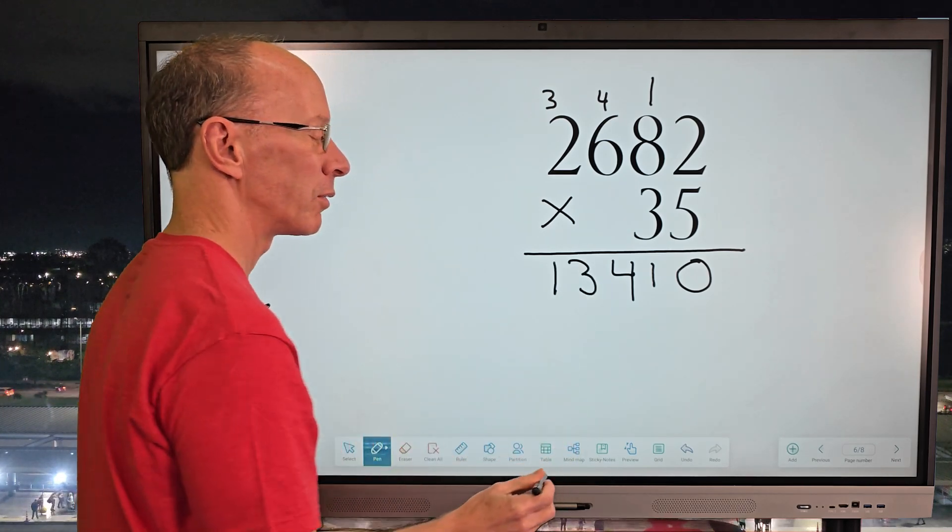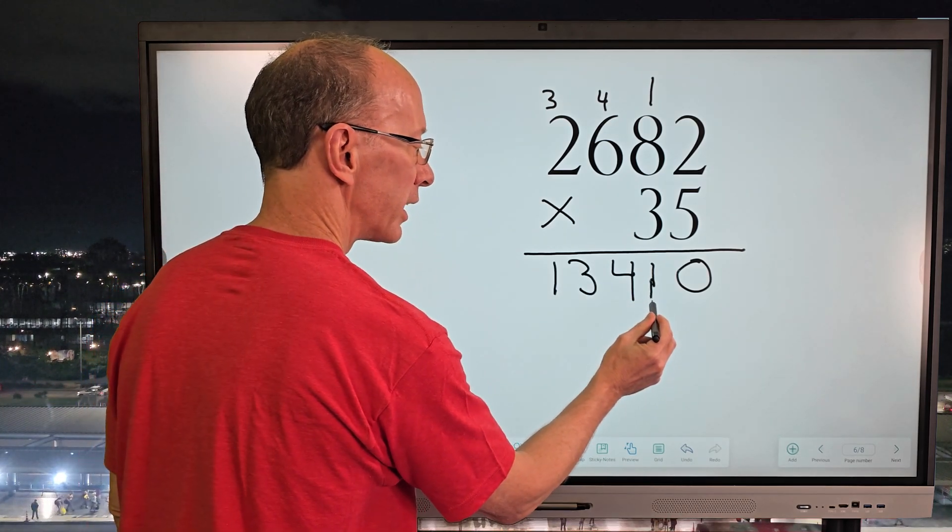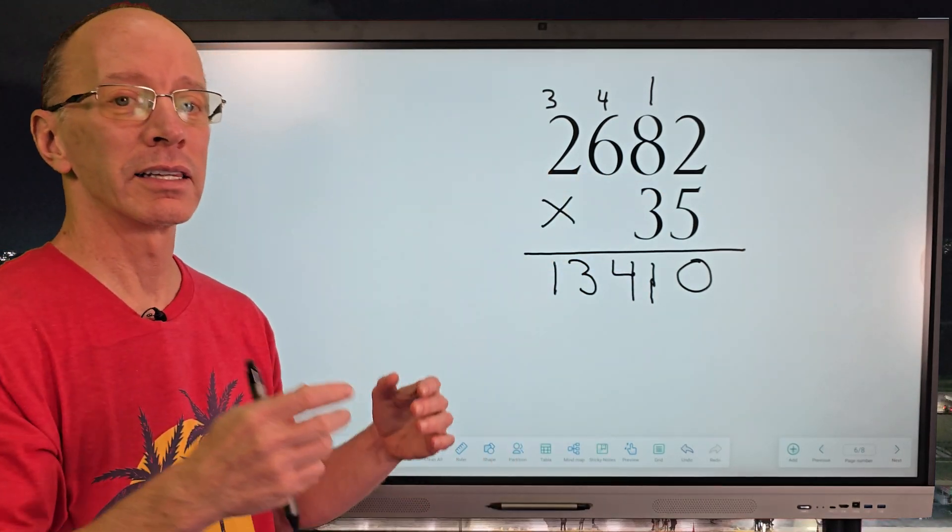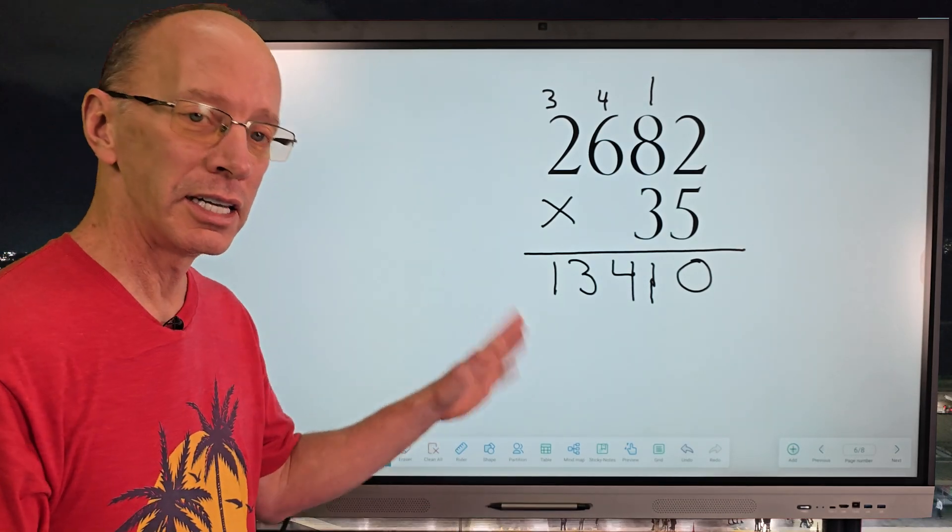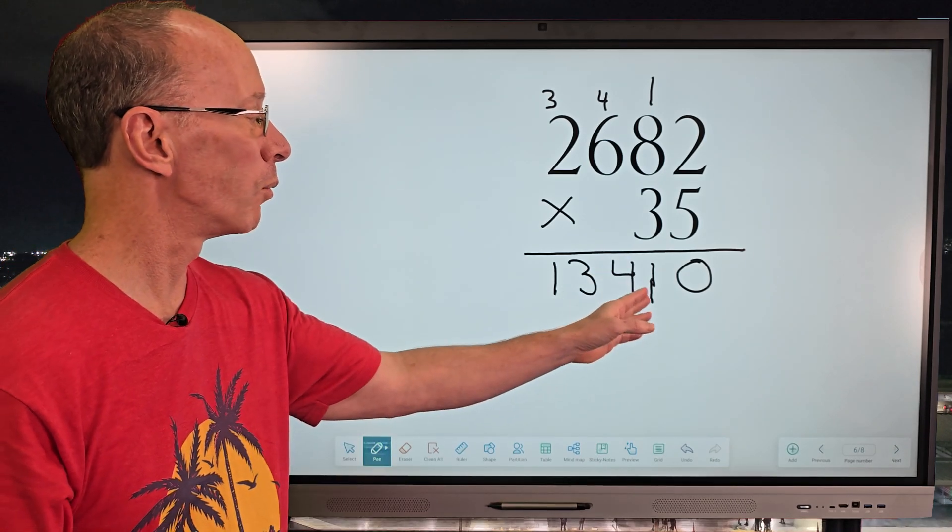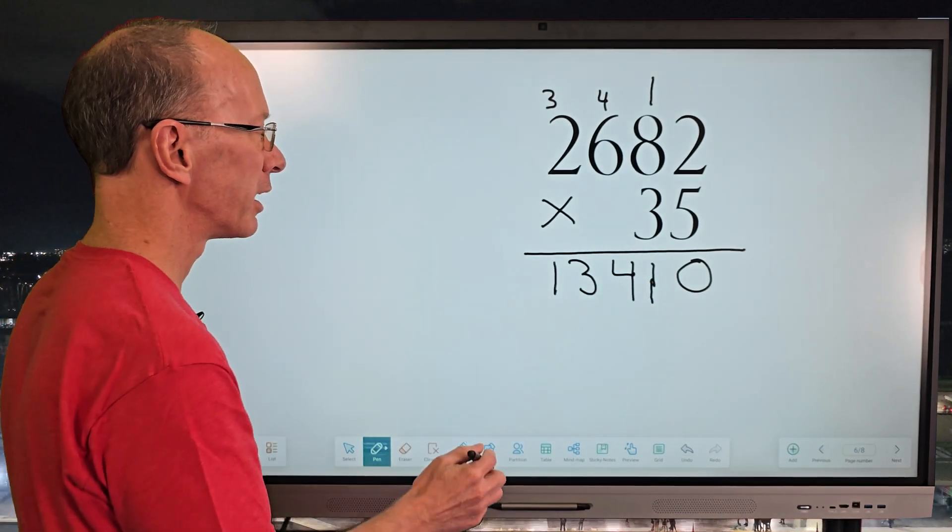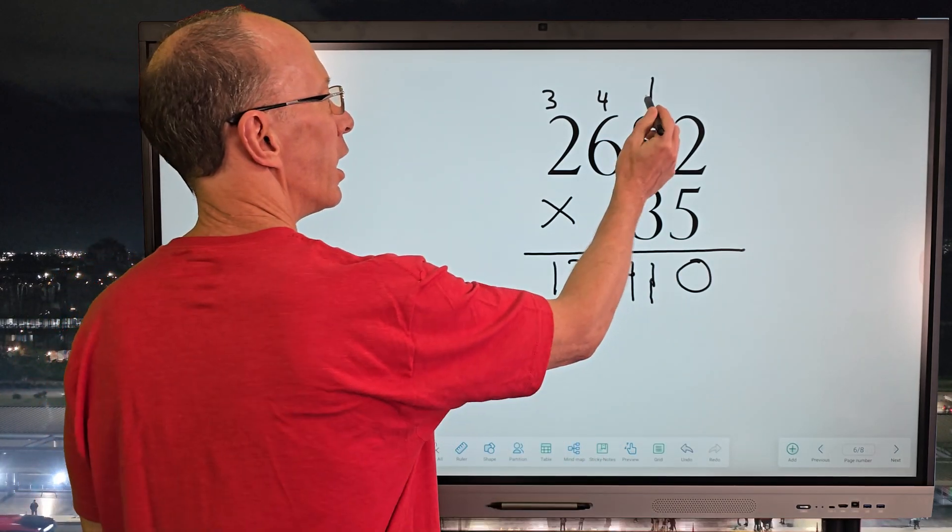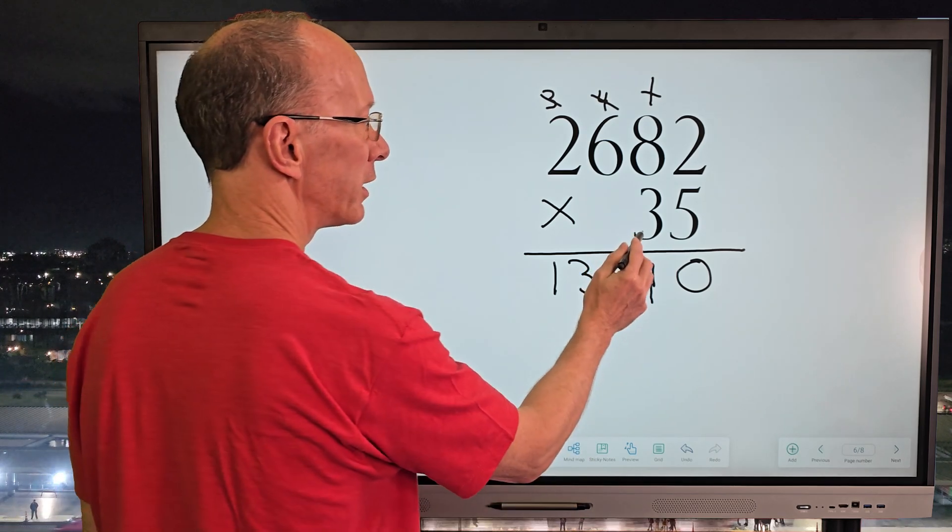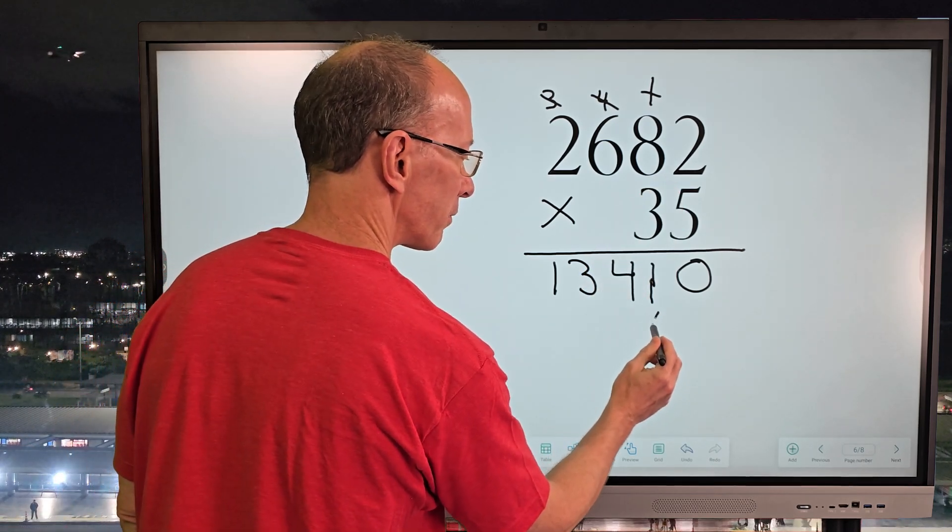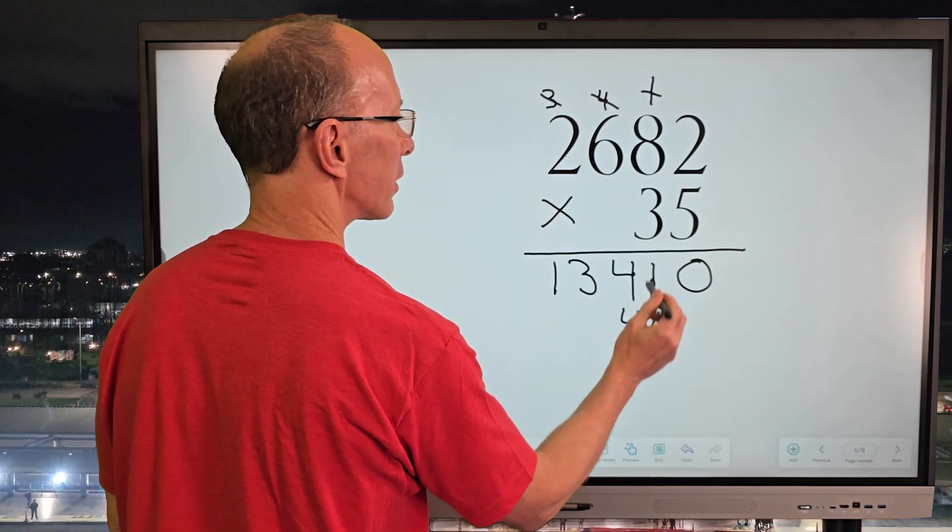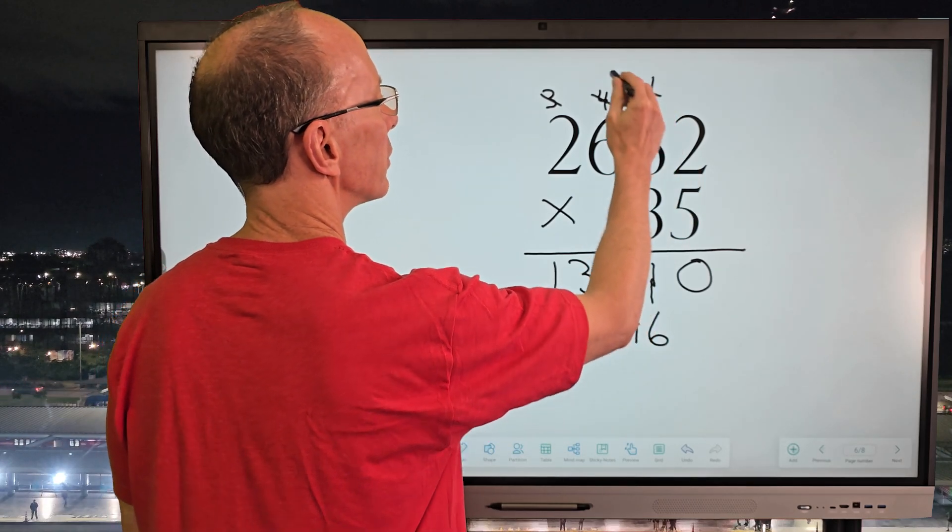Now, one common mistake when students are doing this is they get a little bit sloppy with their numbers. They get kind of jumbled all around. And then that's where they will make some mistakes. So the neater you can write your numbers and more in place, the better. As you can see, my 1 is a little bit sloppy. I could have done a better job on that. Let's go ahead and start with the 3 right here. 3 times 2 equals 6. 3 times 8 is 24. 2 times 8 is 24. Put the 2 right there.